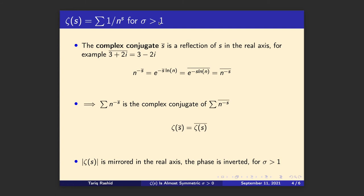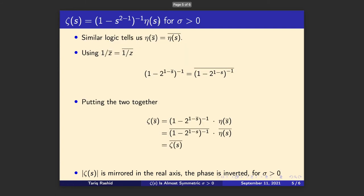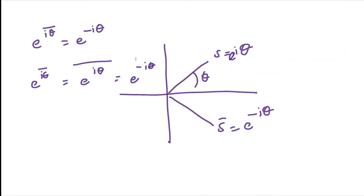Let's see what it looks like for the other expression, valid for sigma more than zero, just to make sure it's the same. We break it down again using sigma(s) and eta(s) — remember the eta function looks very similar to the normal series, it's just the alternating version of zeta. The same logic tells us that when we feed in s̄ it's the same as feeding in s and then taking the complex conjugate afterwards. We also use the identity 1/z̄ = conj(1/z).